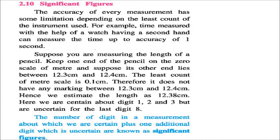Significant figures. The accuracy of every measurement has certain limitations and depends on the least count of the instrument which we have used. For instance, the time measured with the help of a watch which has a second hand can measure time up to an accuracy of one second.